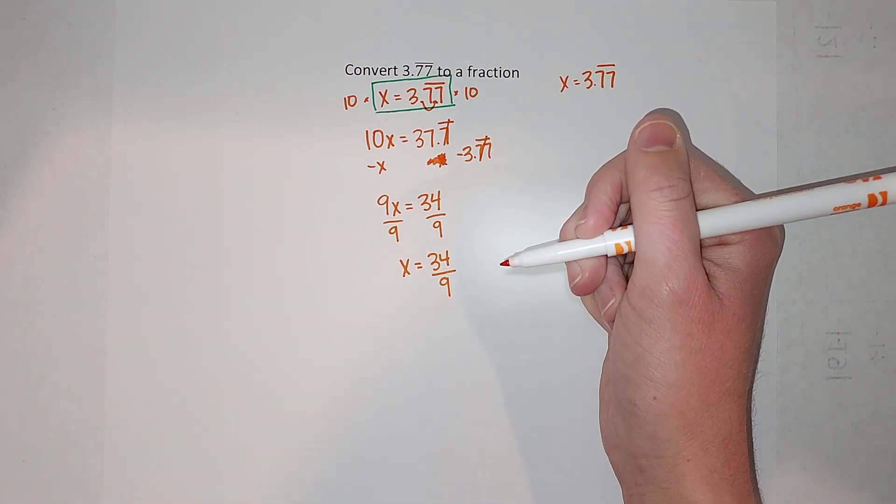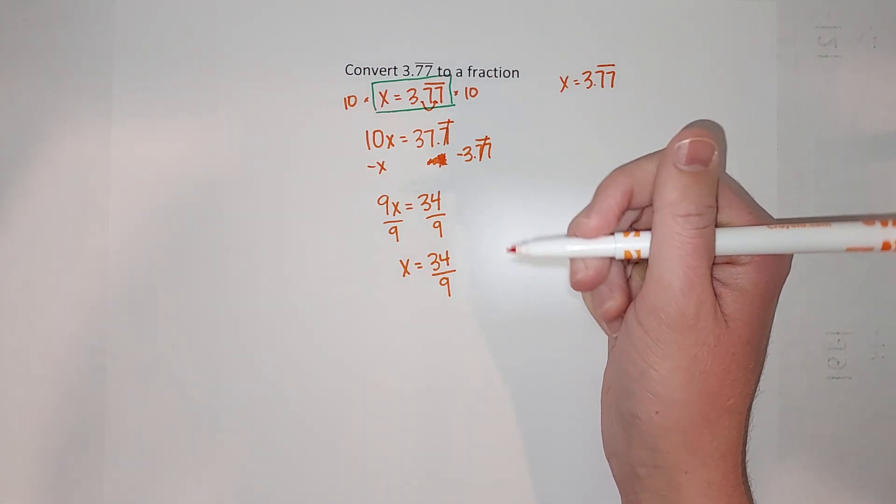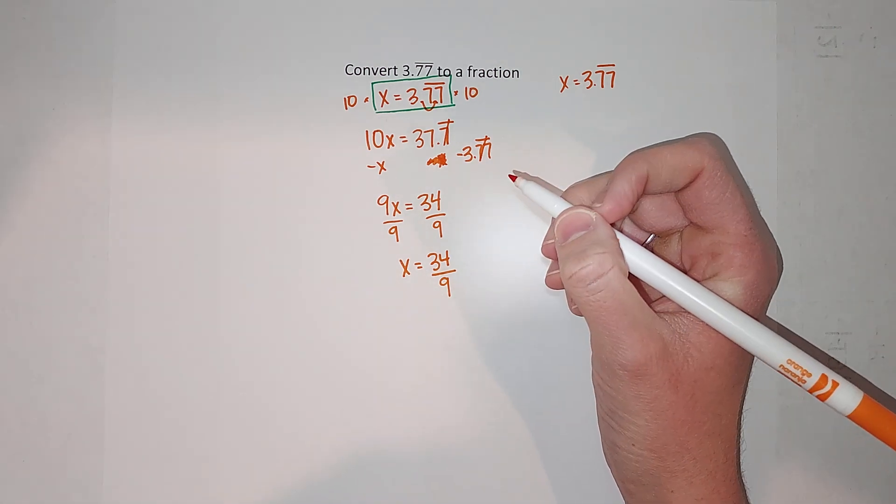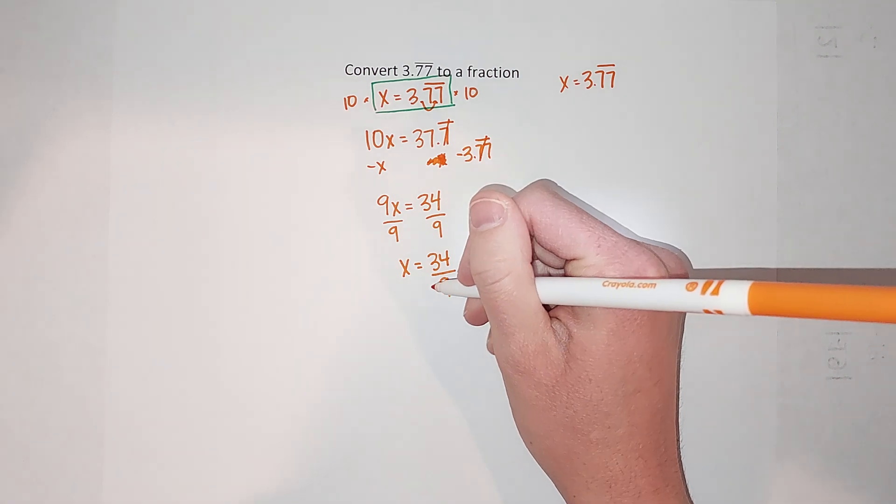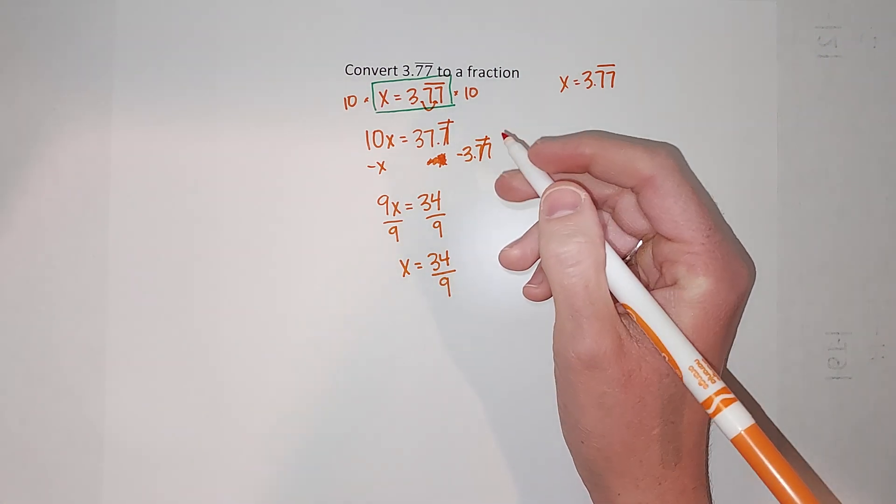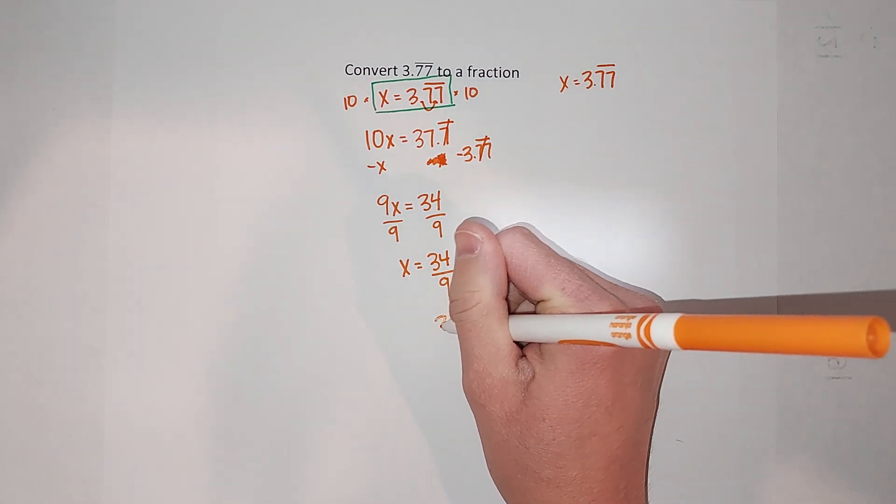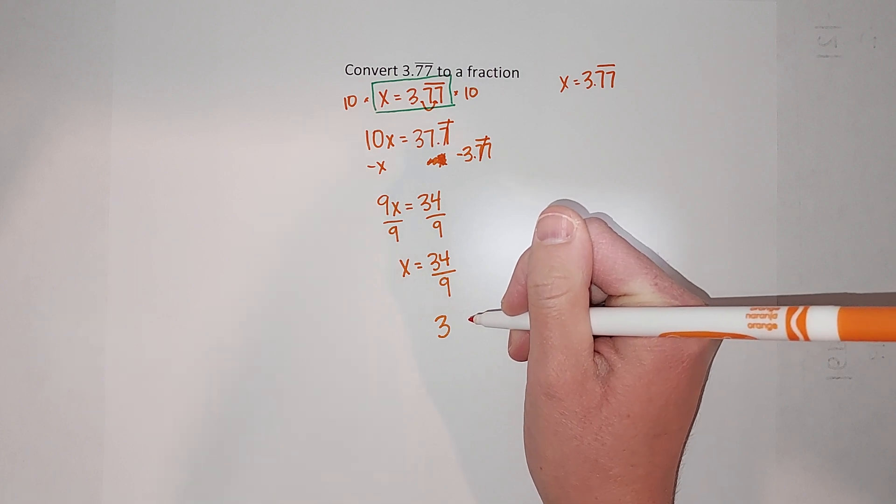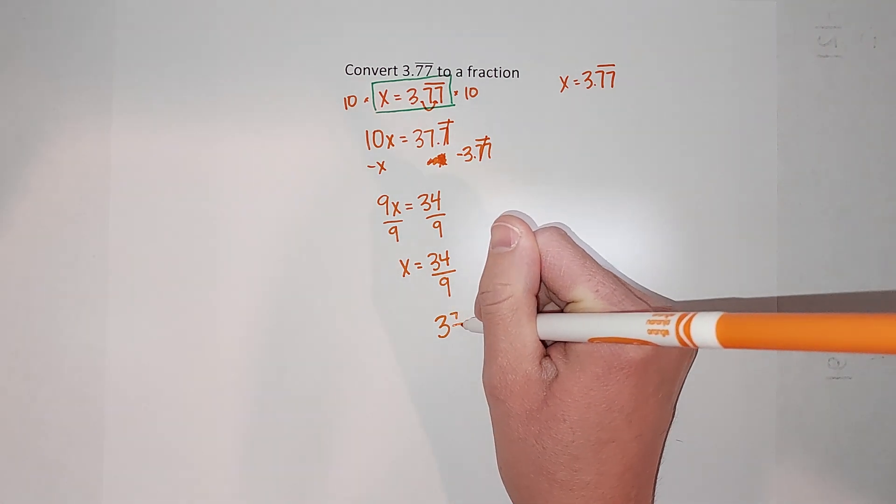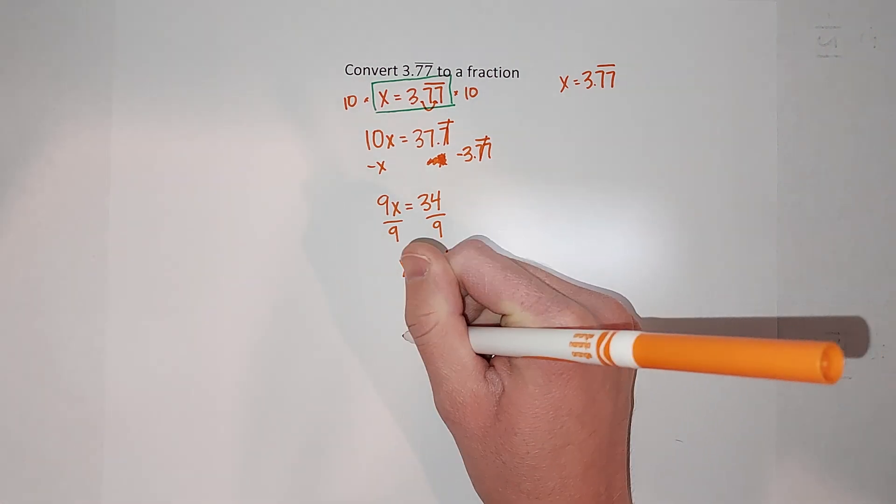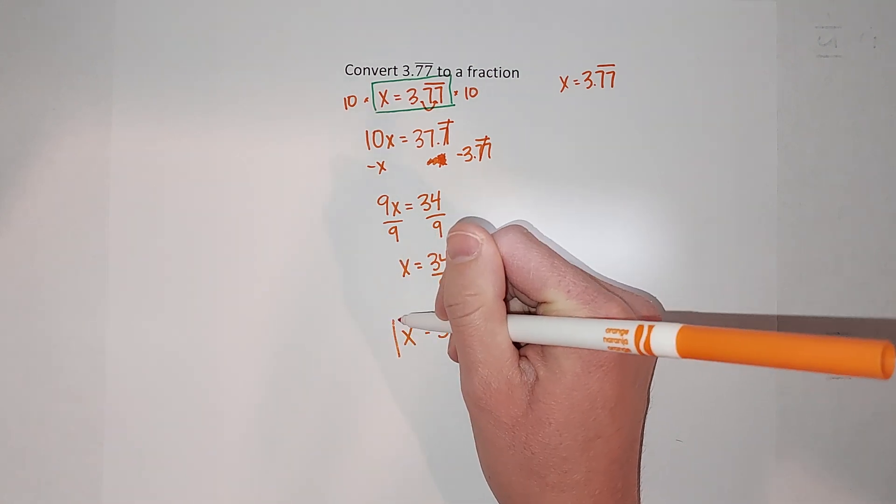But a lot of times teachers like it to be converted to a mixed number. So when I do that, 9 goes into 34 three times and I have seven left over, so that is my 3 and 7/9. If you're like how did she just convert that I'll link a video.